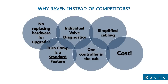So why Raven instead of any other competitors? First, when you upgrade your Hawkeye system to Hawkeye HD, there's no replacing hardware — it's just a simple unlock you type in the monitor. We give you individual valve diagnostics on screen at any time during application. Simplified cabling — it's one run of cable from the ECU all the way out to the boom tip. Turn compensation is a standard feature: you buy Hawkeye, you get turn compensation with it. No upgrades needed.